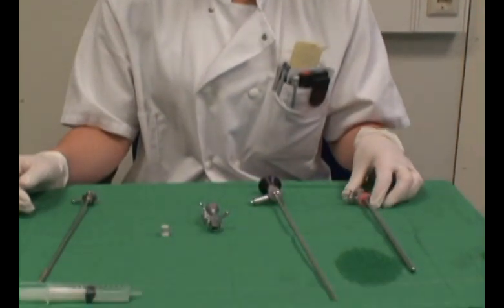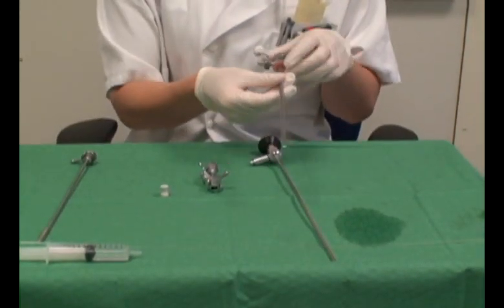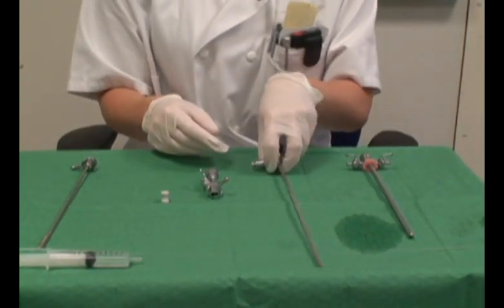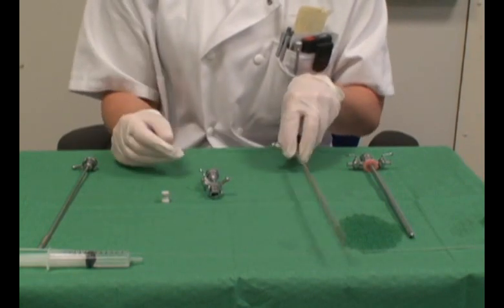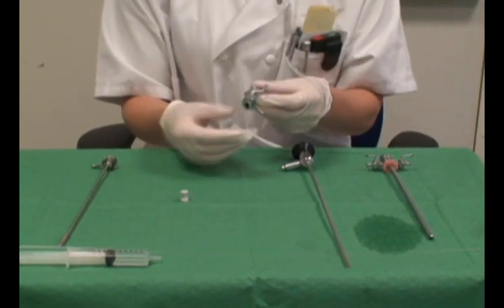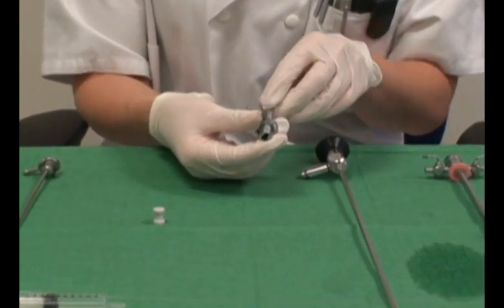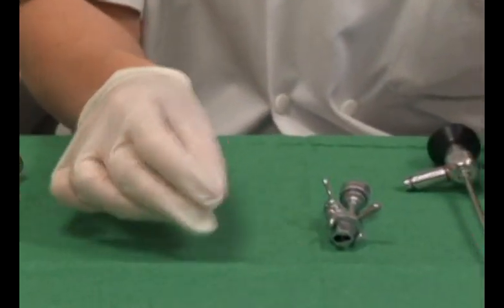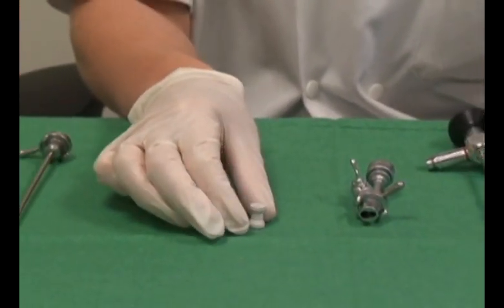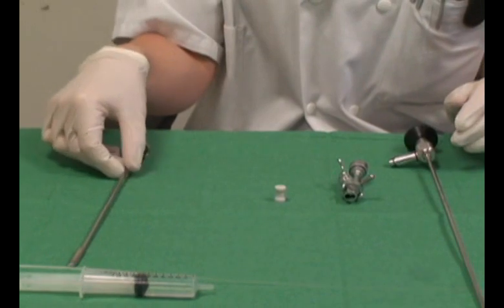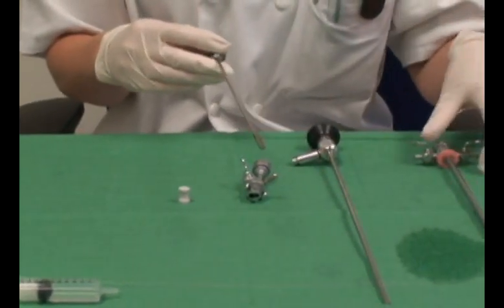The different elements of the cystoscope are the sheath, the lens, the working element, and an adapter used to maintain water tightness. The use of an obturator is optional.